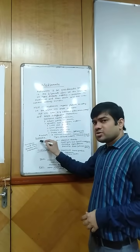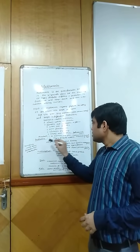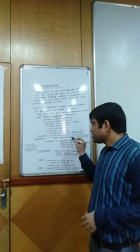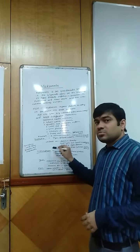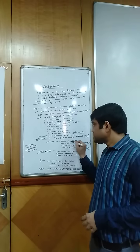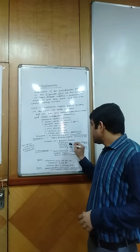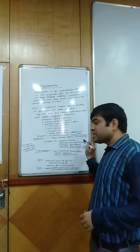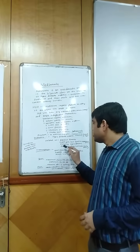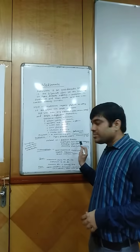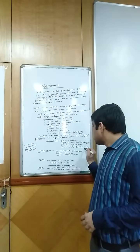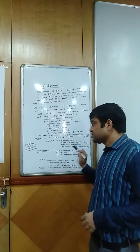Coming to the indications of Metformin, it is indicated in type 2 diabetes mellitus, but also has off-label use in gestational diabetes, weight gain issues caused by anti-psychotic drugs, preventing type 2 diabetes, and preventing PCOD — that is polycystic ovarian disease.